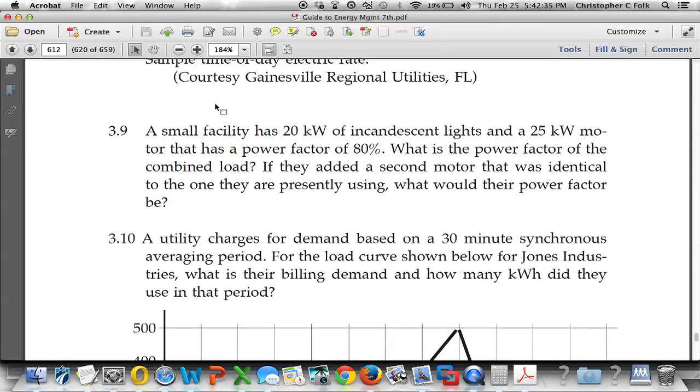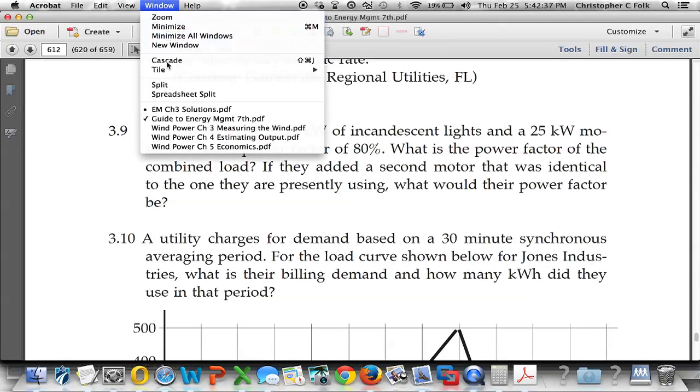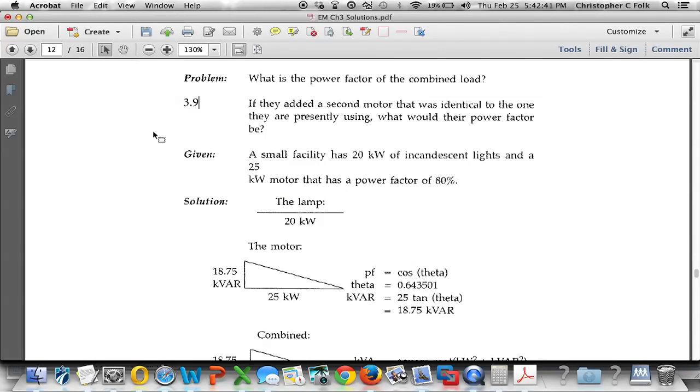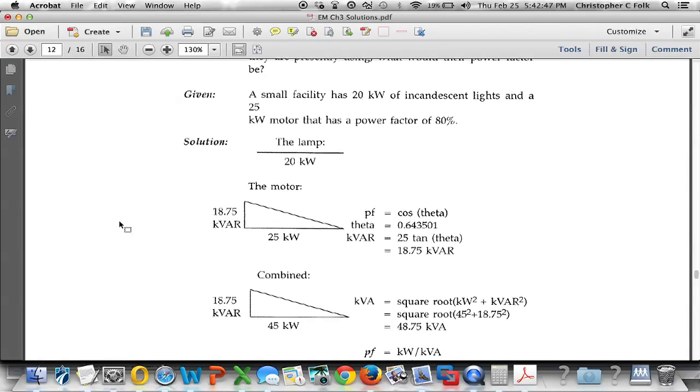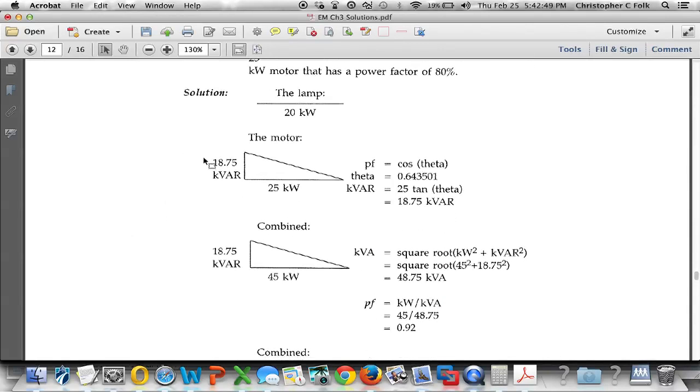So let's look at the solution here. This is the same solution pack that I gave you last week and we can see that they've restated the problem with the given and they've told us that the lamp has 20 kilowatts worth of energy and this is what the motor has.